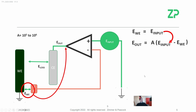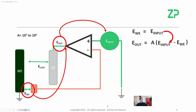The word 'potentiostat' means 'potential' — the control of potential — and 'stat' is the control part. So we have an output which has at least one input driven by the working electrode potential, and the other input is what you — the scientist or operator — actually put into the software.